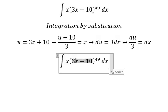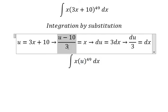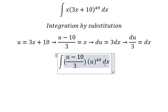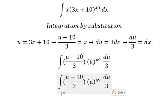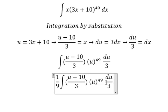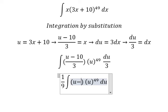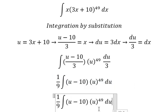So this one we put in here. x we change by this one. Now 3 times 3 you got 1 over 9. u to the power of 49 multiplied by u minus 10.